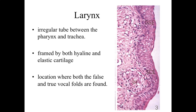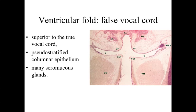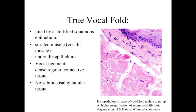Going down into the larynx — an irregular tube between the pharynx and the trachea — we're still seeing the epithelial lining as minimally keratinized stratified squamous. The structure of the respiratory tract is framed by both hyaline and elastic cartilage, and this is the location where both the false and true vocal cords are present. The false vocal cord is superior to the true vocal cord, lined by pseudo-stratified columnar epithelia with underlying seromucous glands. The true vocal fold is lined by stratified squamous epithelia with underlying striated muscle — the vocalis muscle — allowing regulation of the vocal cords by muscular contraction.